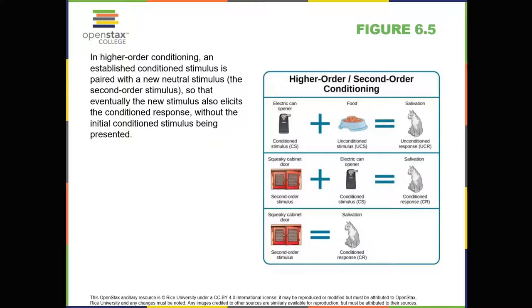What if the cabinet holding Tiger's food becomes squeaky? Tiger hears the squeak of the cabinet, followed by the electric can opener, and then she gets her food. Tiger will learn to get excited when she hears the squeak of the cabinet. Pairing a new neutral stimulus — the squeak — with the conditioned stimulus is called higher order conditioning, or second order conditioning. This means you're using the conditioned stimulus of the can opener to condition another stimulus, the squeaky cabinet.